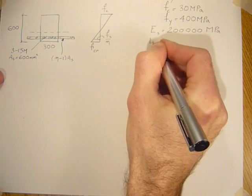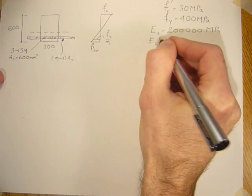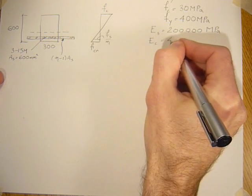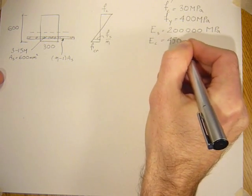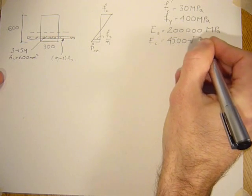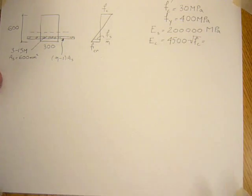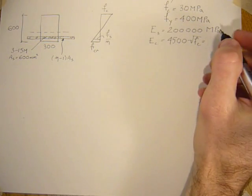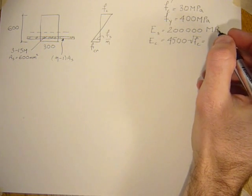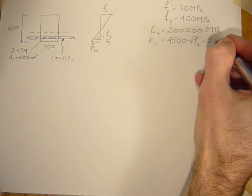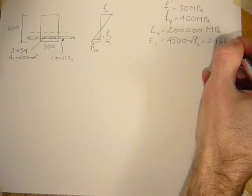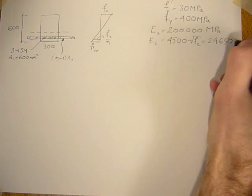And the E of the concrete is 4500 times the square root of F'C. So 4500 times the square root of 30. That comes out to be approximately 24,650 MPa.